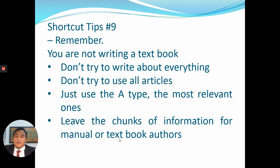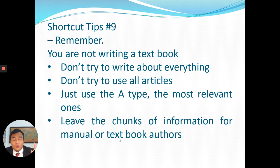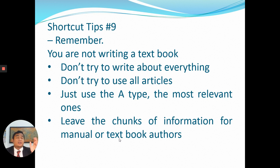Shortcut tip number nine: remember you are not writing a textbook. Don't try to write about everything. When you read many journal articles, you'll be full of information and everything seems interesting, but don't try to use all articles. Just use the A-type — the highly relevant ones. Leave large chunks of information for writing a manual or textbook. When writing a literature review, choose only the most relevant articles.